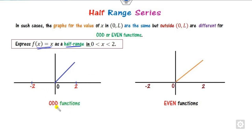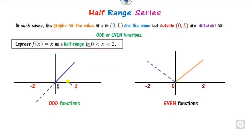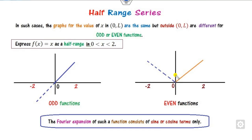There are two ways to do this. One way is to express it in terms of an odd function; the second is in terms of an even function. For the odd function, we know that whenever f(−x) = −f(x) it is an odd function — you can see this in the graph. For the even function, we know that f(−x) = f(x). The Fourier expression for these two kinds — even or odd — is usually represented in the form of sine and cosine terms respectively.